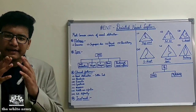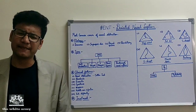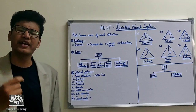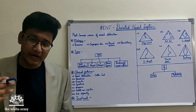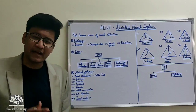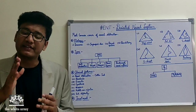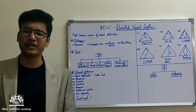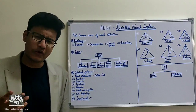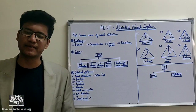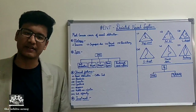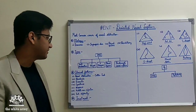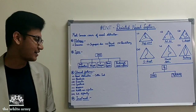External deformity is another clinical feature. Students often ask why a deviated nasal septum causes external nose deformity. The answer is that the nasal septum fuses with the upper lateral cartilage in the upper one-third of the nose, so deviation of the septum also results in deviation of the external nose.